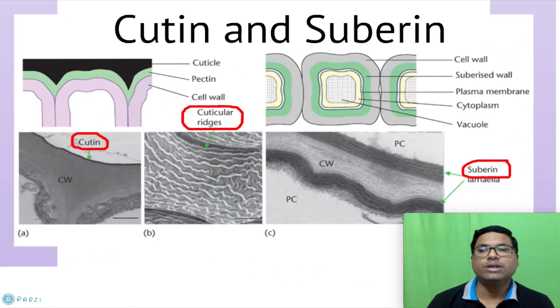Then cutin and suberin are the outer layers of cell walls. As you can see in this diagram over here, cutin which is present as outer layer to the cell wall as well as suberin in these cases.